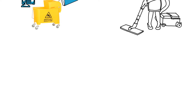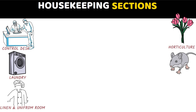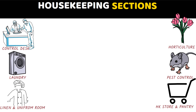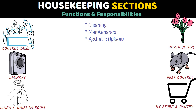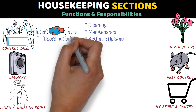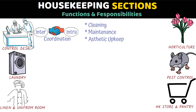Along with sections and sub-departments, we also covered the key areas of housekeeping. The primary function is cleaning, maintenance, and aesthetic upkeep of guest rooms, public areas, back areas, and surroundings. This brings us to coordination — the housekeeping control desk coordinates all inter- and intra-departmental activities. Inter-departmental coordination includes departments such as front office, F&B service, engineering and maintenance, sales, and purchasing. Intra-departmental coordination means within its own sub-departments such as laundry, linen and uniform room, and horticulture.